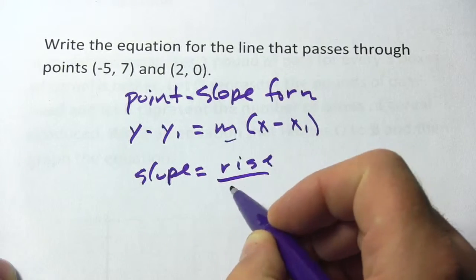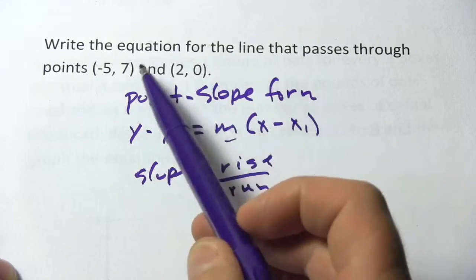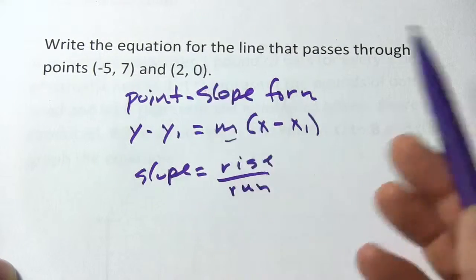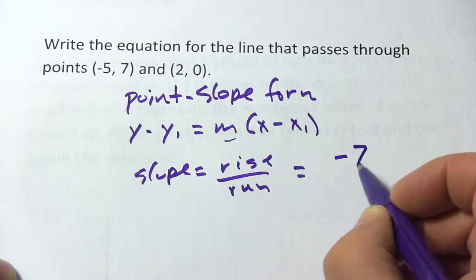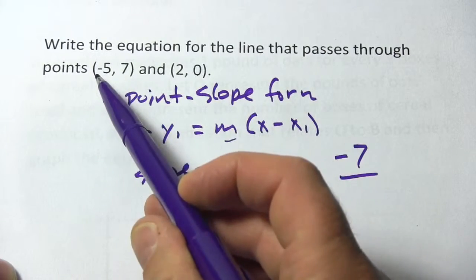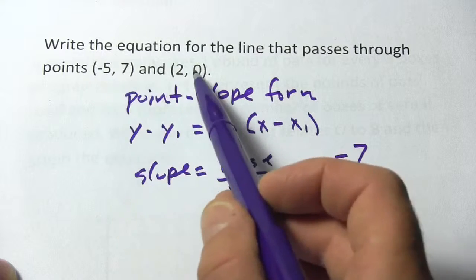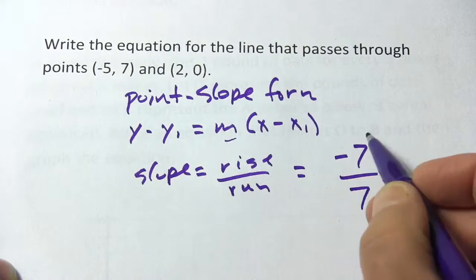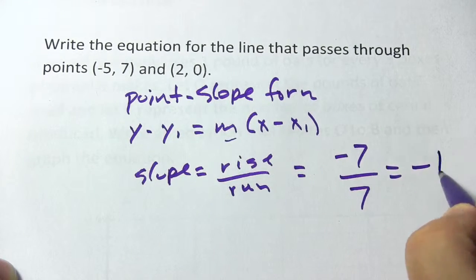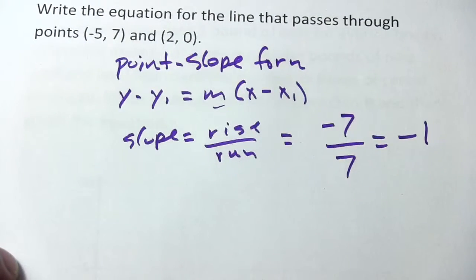Slope is rise over run. So let's take a look at this. The rise from 7 to 0, that's actually a negative 7. It goes down 7. And our run from negative 5 to 2, that's a positive 7. And simplifying this, we just get a negative 1. So our slope is negative 1.